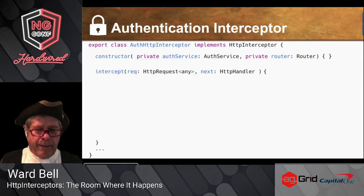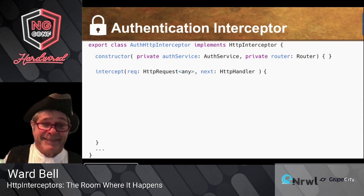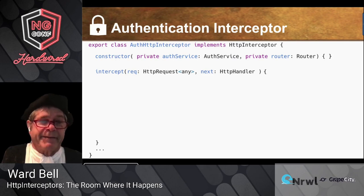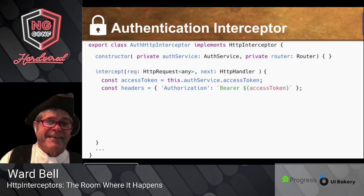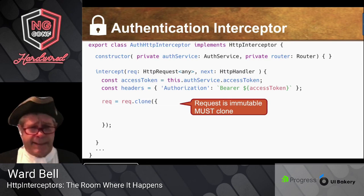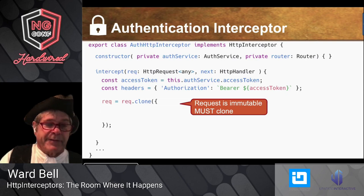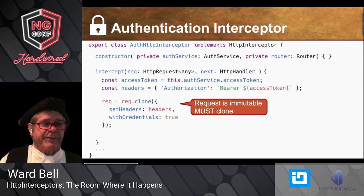Let's add a fourth interceptor focused on authentication, which also demonstrates how to manipulate the request and response. It has the same structure — we inject an authentication service and the router. In the intercept method, we get our access token from the auth service, prepare our headers, and assign them to the request. The request object is immutable, so you can't change it directly, but it has a clone method that makes a shallow copy. In the clone options, you set the new headers and also with credentials for CORS.